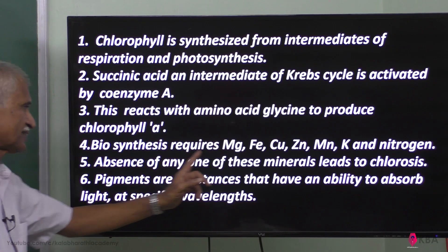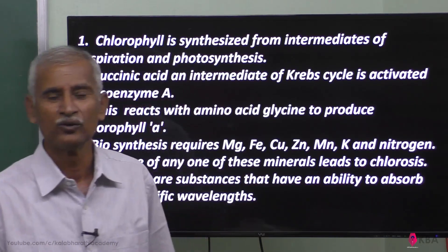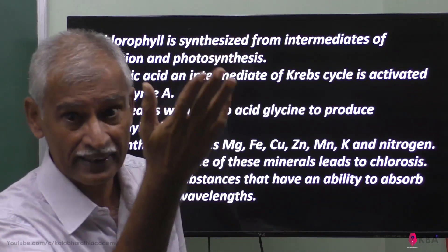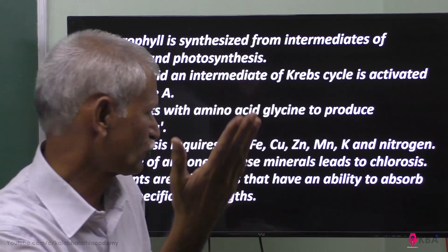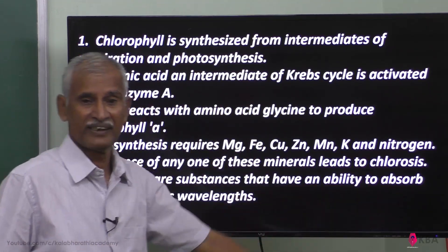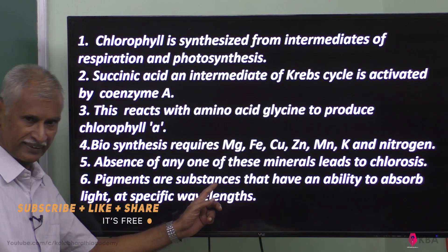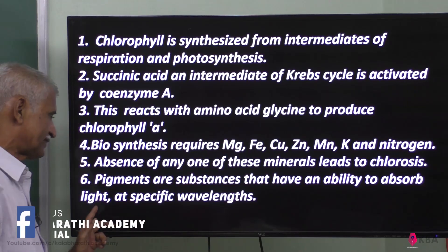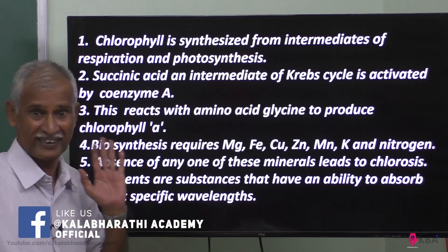Absence of any one of these inorganic elements leads to chlorosis. We say it is chlorosis when the leaf loses its green color and becomes non-green. So deficiency of any one of these inorganic elements means chlorophyll cannot be produced. Pigments are substances that have an ability to absorb light at a specific wavelength. Thank you students, we will meet again.